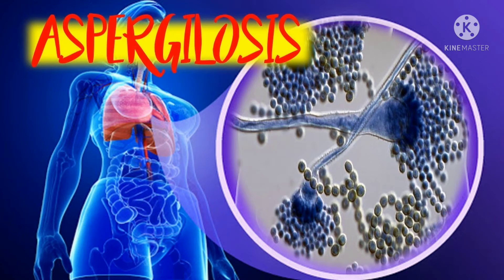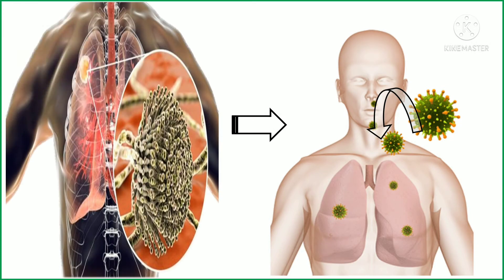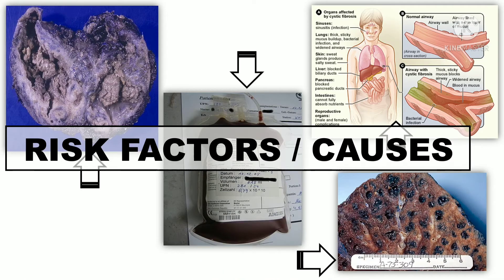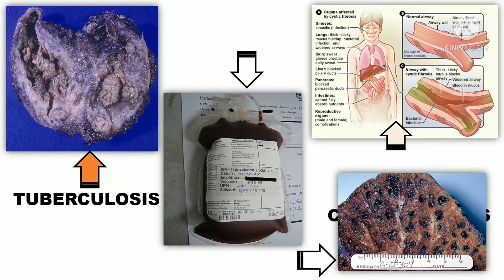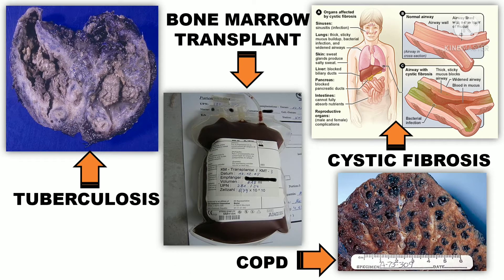Aspergillosis is a fungal infection caused by the genus Aspergillus. The infection occurs mostly in the lungs, caused by a common mold that is breathed in frequently, but it does not affect everyone. It generally affects people with decreased immunity, including those with lung diseases such as tuberculosis, cystic fibrosis, COPD, or those who have recently undergone bone marrow transplant or stem cell transplant, making them more prone to the infection.